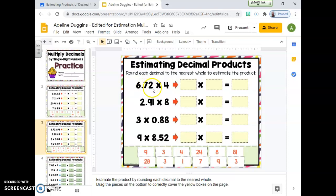Six and seventy-two hundredths, six dollars and seventy-two cents. These even look like dollar amounts, don't they? Six dollars and seventy-two cents, that's going to round up to seven dollars. Two dollars and ninety-one cents, eighty-eight cents, eight dollars and fifty-two cents.